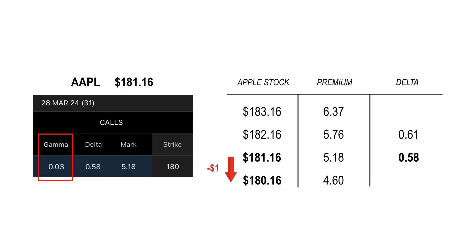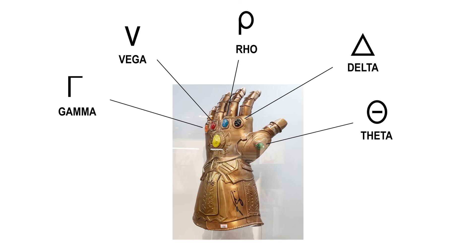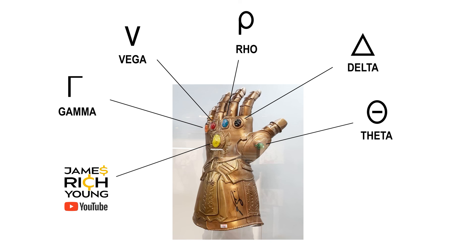Now what happens if the stock dropped a dollar? Well, in this call option, the delta decreases by the gamma amount. So my delta will drop from $0.58 to $0.55. So gamma is a way to gauge how fast the delta will accelerate. Those are the five Greeks. To me, there's no way I could trade options without knowing them. I hope this was helpful — it may take a couple of watches, but let me know if you have any questions. This is just scratching the surface — I'll go deeper into these in a later video. But for now, I appreciate you for being here and I hope to see you on the next one.